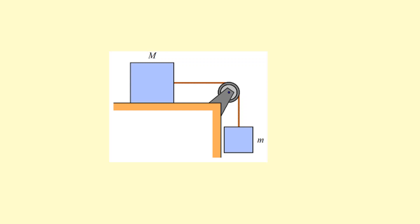Considering Newton's third law pairs between two masses and a rope: the overhanging mass pulls down on the rope, and the rope pulls the overhanging mass up with an equal and opposite tension T. The box on the surface is pulled by that same tension T, and it in turn pulls on the rope with the same tension.